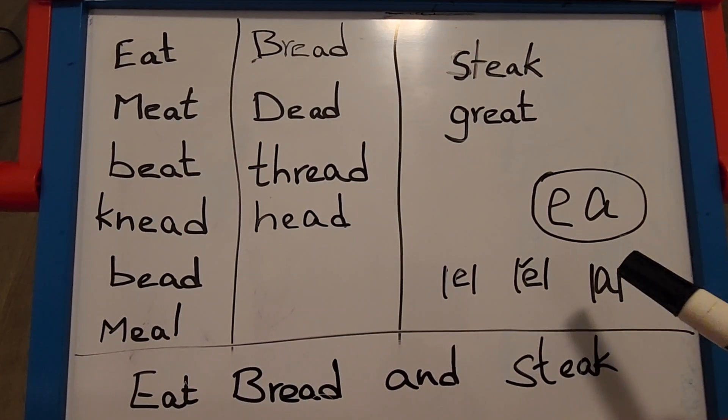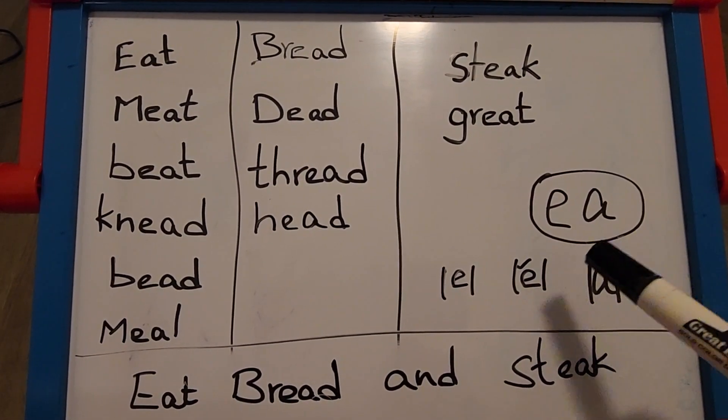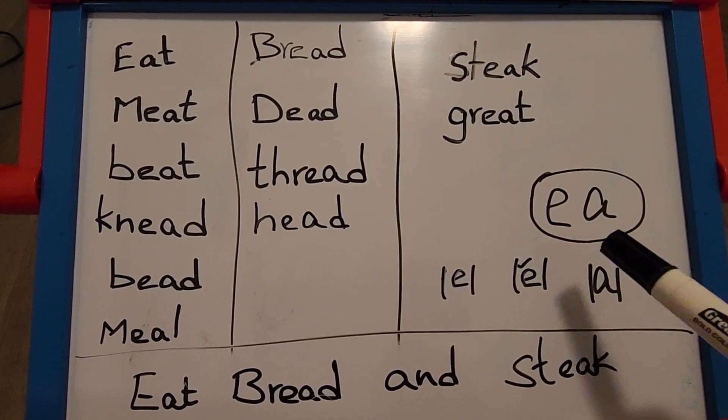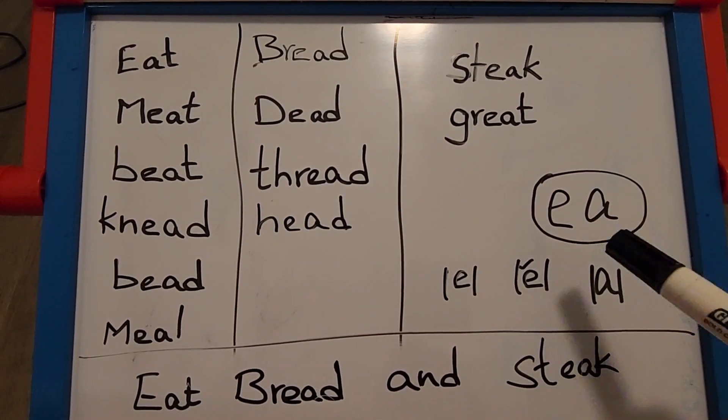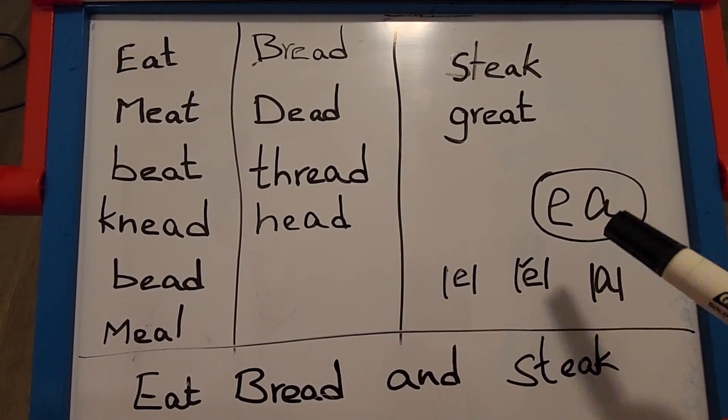Hi all, let's learn about EA vowel pair. Two vowels together make a different sound, called a vowel pair.